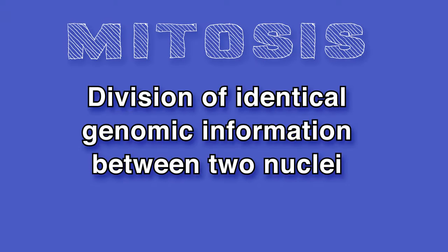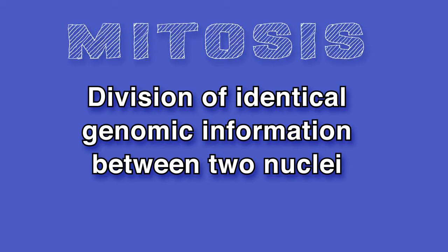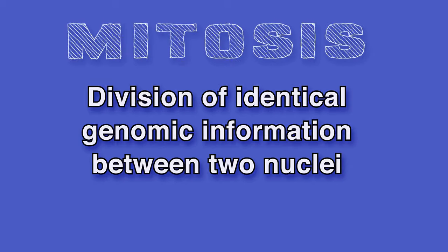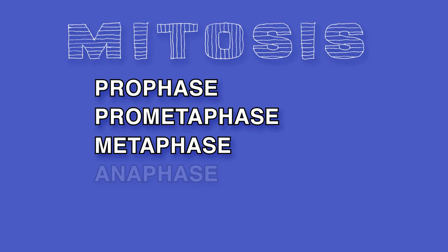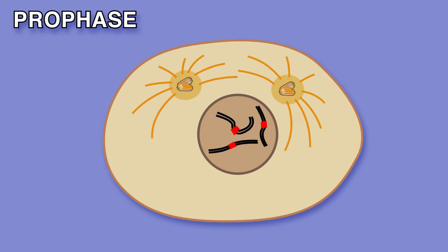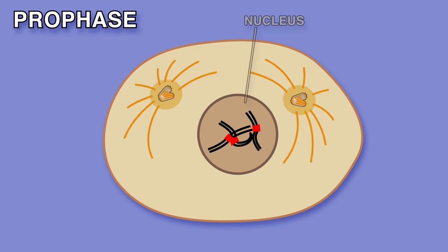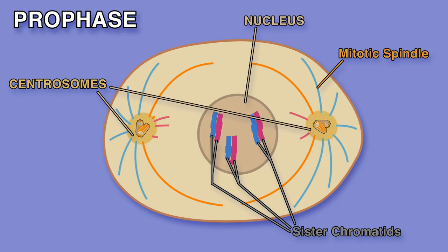Finally, we come to mitosis — the division of identical genomic information between the two nuclei. Mitosis has five stages: prophase, prometaphase, metaphase, anaphase, and telophase. During prophase, chromosomes condense within the nucleus, with each chromosome consisting of two linked sister chromatids. Outside the nucleus, the mitotic spindle assembles between two centrosomes.